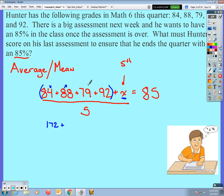Plus, let's go 79 plus 92. 9 plus 2 is 11. 9 and 7 is 16 plus 1 is 17. So we have 171 here. We have plus the X still. We still have all this divided by 5 equals Hunter's score of 85, the score he wants.